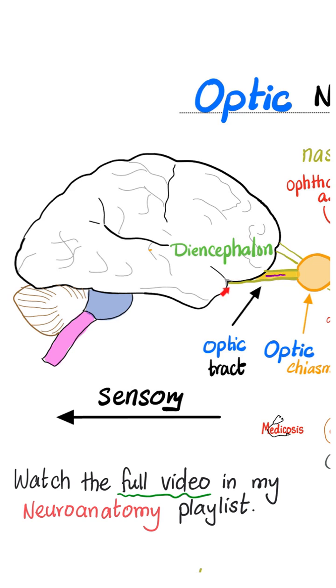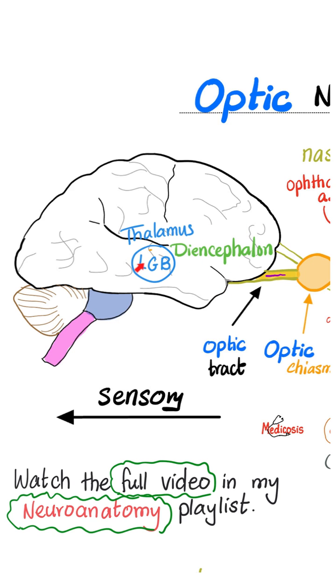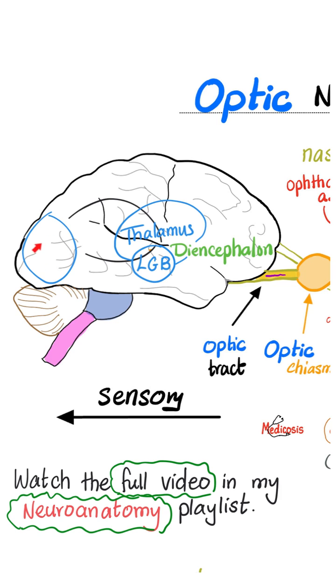After the optic tract, the pathway goes to the lateral geniculate body of the thalamus, which is part of the diencephalon. Then we have the optic radiation, and finally the visual cortex, located in the occipital lobe.